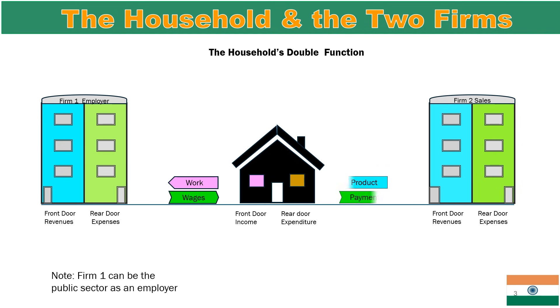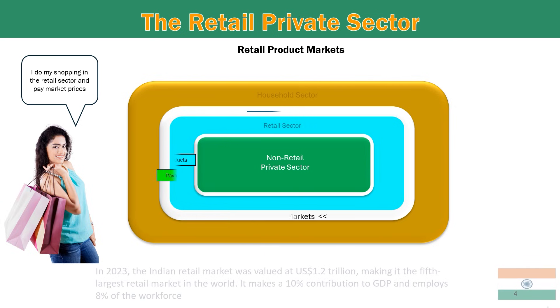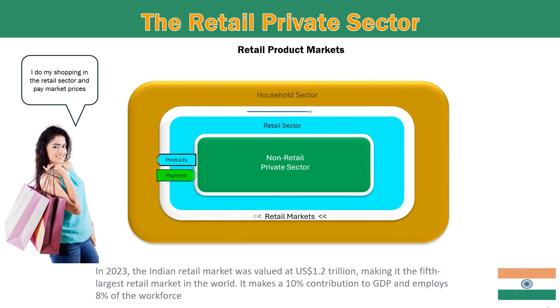This indicates the household's dual function as part of the circular flow in the private sector. In this illustration, we focus on the retail private sector where a householder is shown shopping. The blue arrow for products and the green arrows for payment represent the retail transactions. This continuous gap circulating between households and firms is the retail market conduit where transactions take place and economic flows circulate.